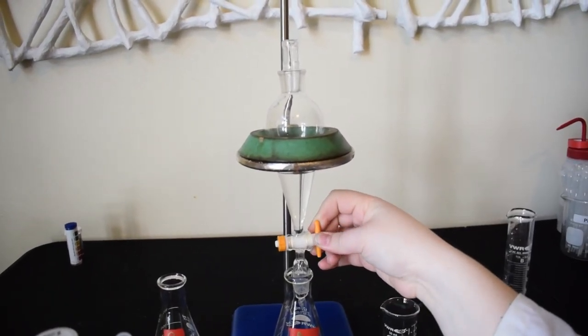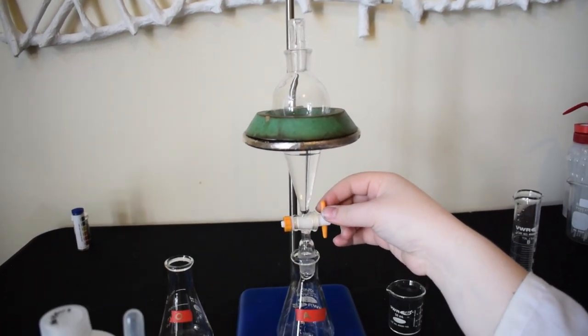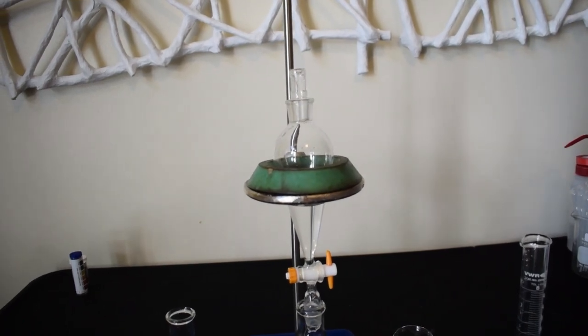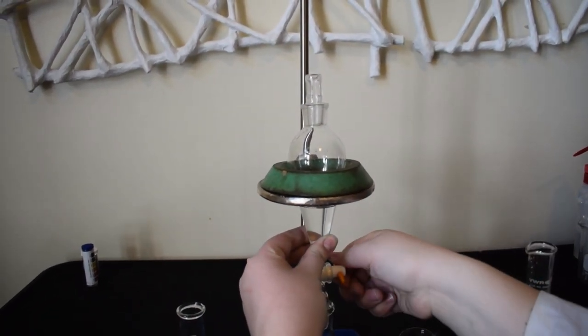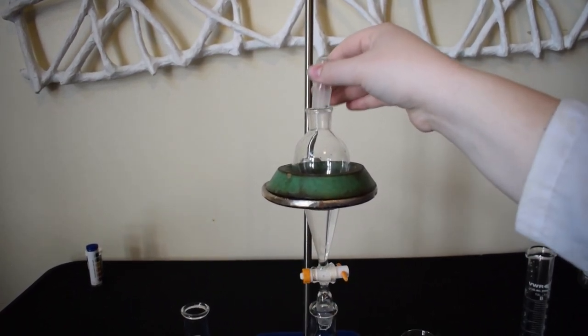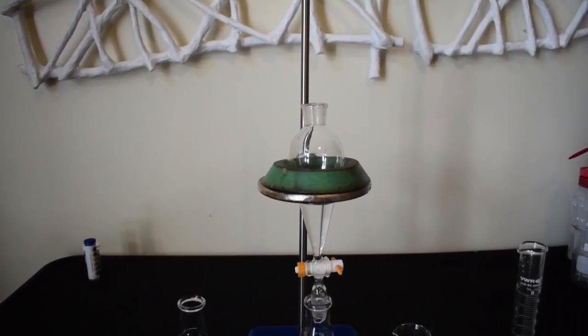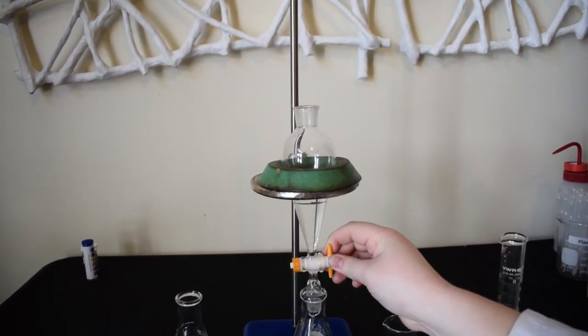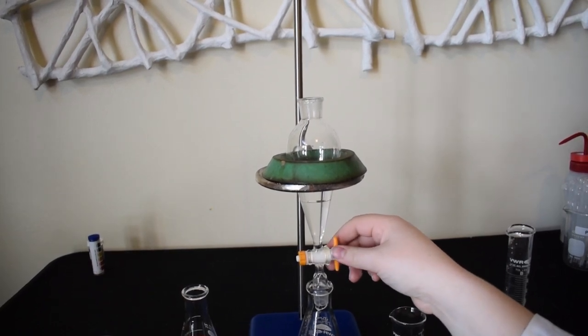Now it's time to drain. But it's not draining. Well, that's because we left the stopper on. One of the most common mistakes in working with separatory funnels is not removing the stopper before you try to drain off the bottom layer. Always make sure to remove the stopper and then open the stopcock to drain the aqueous layer.